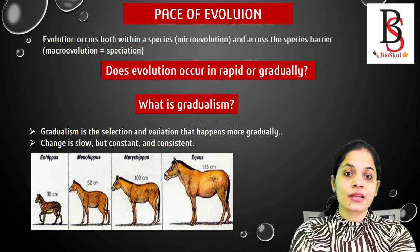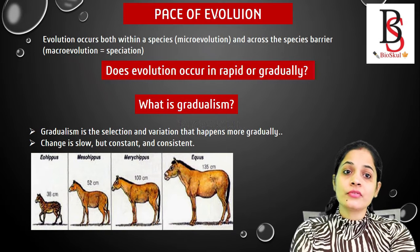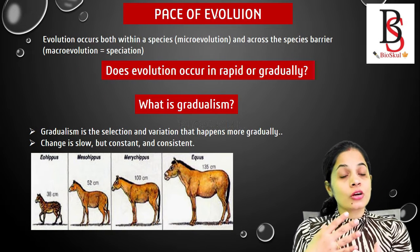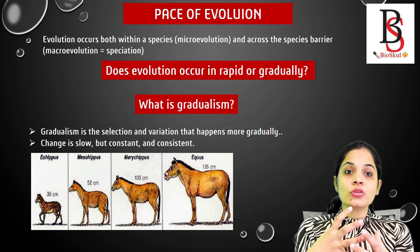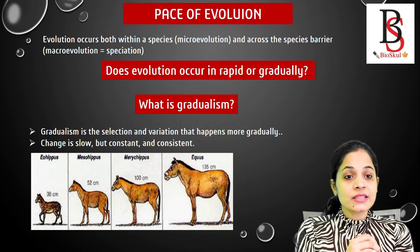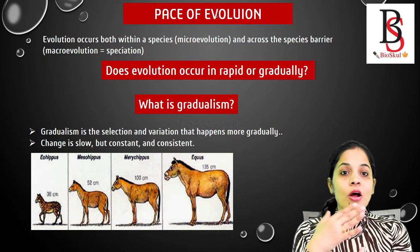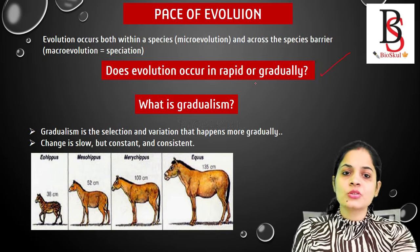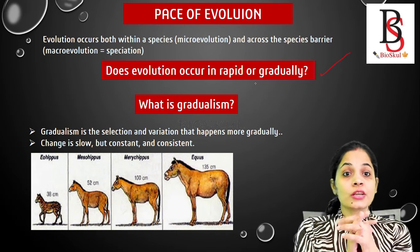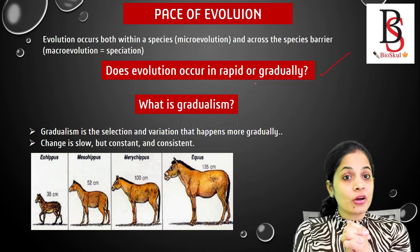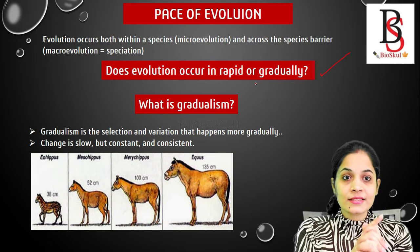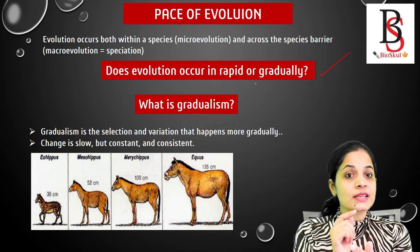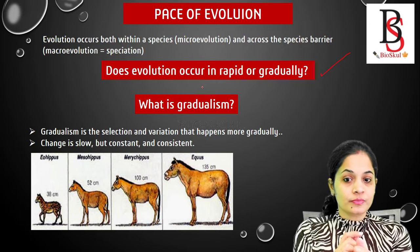Let's begin. The pace of evolution — evolution occurs both within species and across species. So does evolution occur rapidly or gradually? To know the answer, first we will discuss what is gradualism.